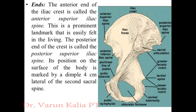The anterior end of the iliac crest is called the anterior superior iliac spine (ASIS). This is a prominent landmark that is easily felt in the living. On any person's hip bone, on the anterior side, you can easily find the ASIS.